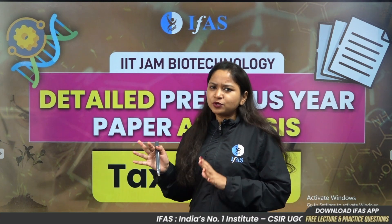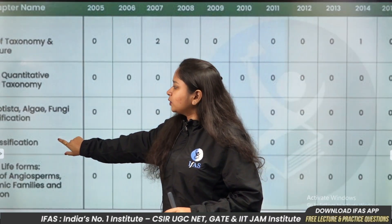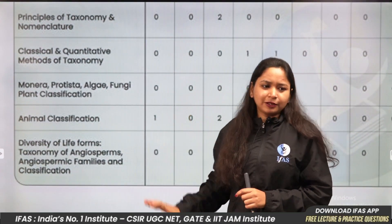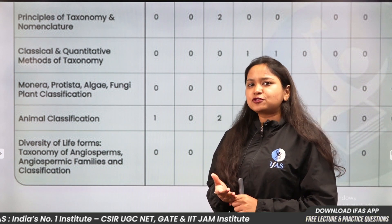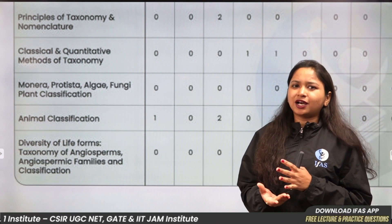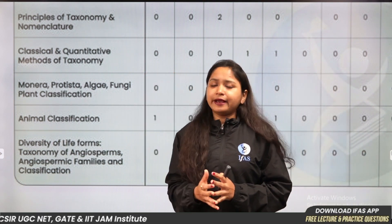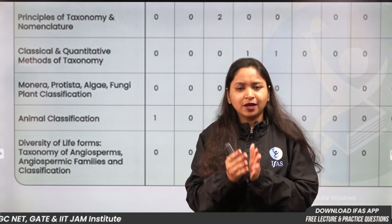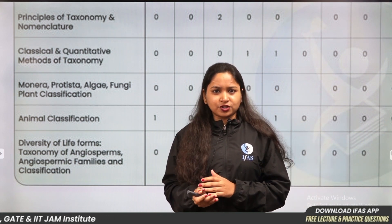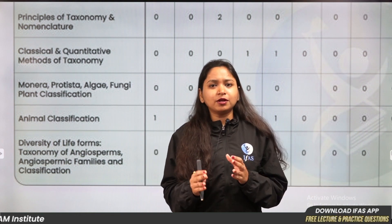We ask direct questions here. If we talk about taxonomy, we have classified it this way. As you can see, these are all pure theoretical papers. The principles of taxonomy and nomenclature — how do we perform nomenclature, what does it keep in mind? Classical and quantitative methods of taxonomy — how do we do classification, why do we say that this is in archaea or bacteria, how do we make that piece?